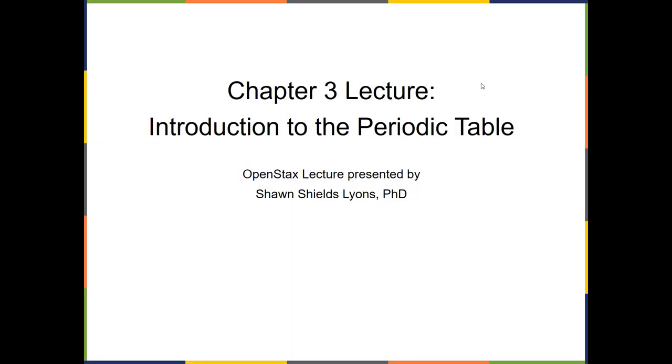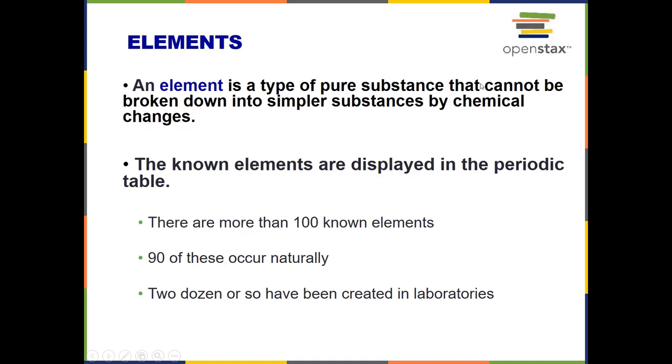Introduction to the Periodic Table. Let's talk first about elements because that's what we're going to find on the Periodic Table. It's basically a type of pure substance that can't be broken down into simpler substances by chemical changes. All of the known elements are displayed in the Periodic Table. There are more than a hundred of them. Ninety of these occur naturally and two dozen or so have been created in laboratories.